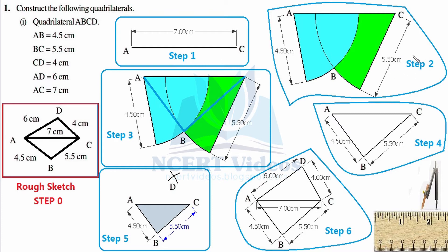Before Step 2, here is an important technique we will use repeatedly: 'adjust your compasses' means placing the needle at the initial point of the ruler and opening the pencil side to the desired length. Now adjust your compasses to 4.5 cm — place the needle at the ruler's zero mark and open the pencil to 4.5 cm. Then place the needle at point A and draw an arc. We use arcs because the radius is equidistant — that is the only reason for using a pair of compasses.